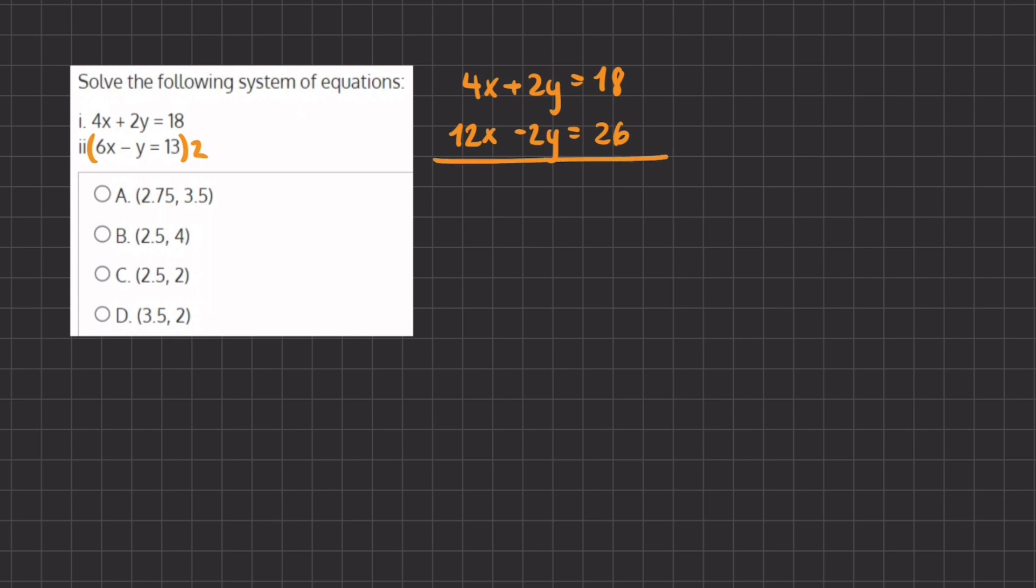If we add these two equations together, our 2y's cancel out, and we are left with 16x equals 44. To isolate x and find its value, we will divide both sides by 16. We are left with x equals 44 divided by 16. If we simplify this by dividing the numerator and denominator by 4, we are left with x equals 11 divided by 4.